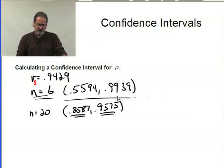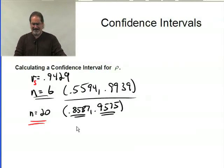And on both of these, the interpretation is the same. You're 95% certain that the true correlation, whatever it is, is somewhere between .55 and .99, or if we had this larger sample size, in between .85 and .95. That's it. That's all there is to calculating a confidence interval for rho.